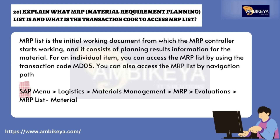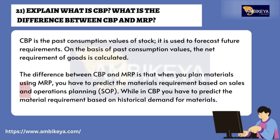Question number twenty: explain what an MRP (Material Requirement Planning) list is and what is the transaction code to access the MRP list. The MRP list is the initial working document from which the MRP controller starts working. It consists of planning results and information for the material. For an individual item, you can access the MRP list using transaction code MD05, or by navigating to SAP Menu > Logistics > Materials Management > MRP > Evaluations > MRP List > Material.